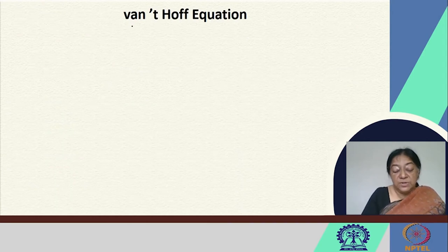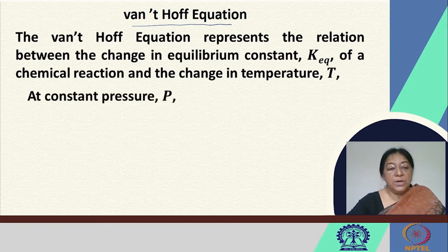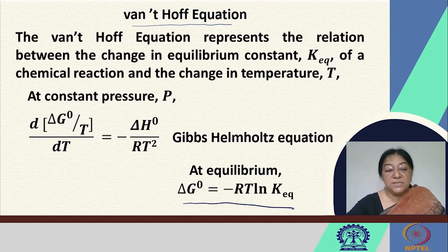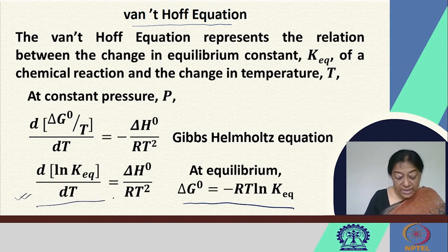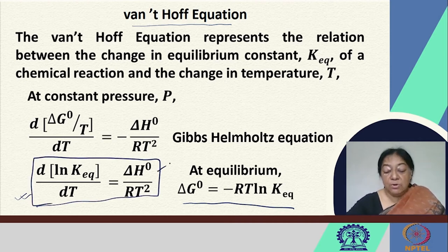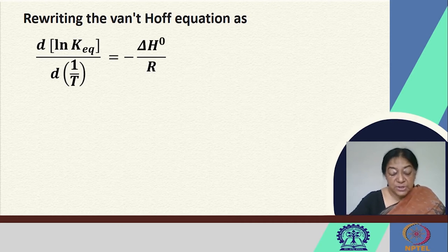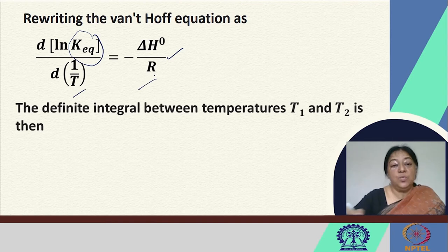Another aspect of determining thermodynamic parameters comes from the Van't Hoff equation, which represents the relation between the change in the equilibrium constant of a specific chemical reaction and the change in temperature T. At constant pressure, we have the Gibbs-Helmholtz equation. We know at equilibrium that ΔG⁰ = −RT ln K_eq. From this, we can work it out to express it in terms of enthalpy contributions, and we can rewrite it as an expression for K_eq from which we extract specific thermodynamic parameters.